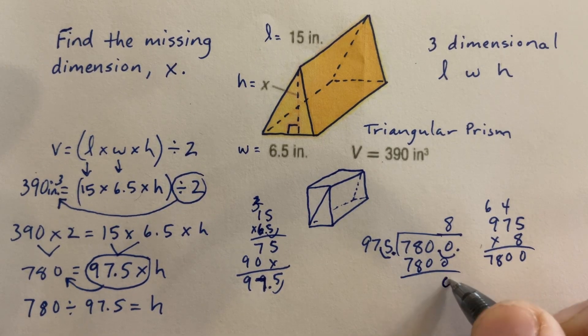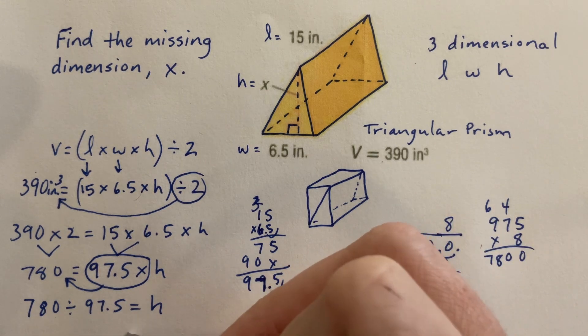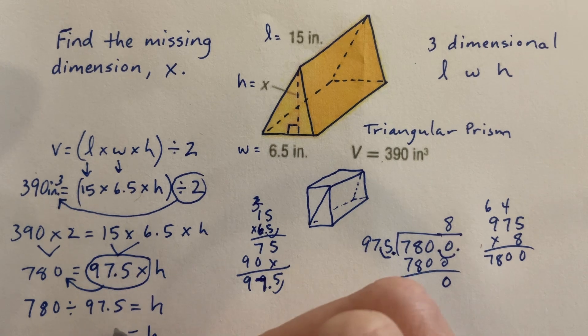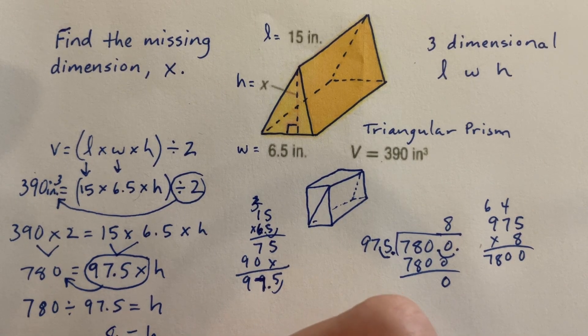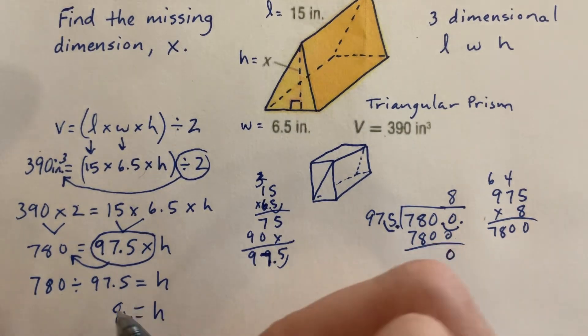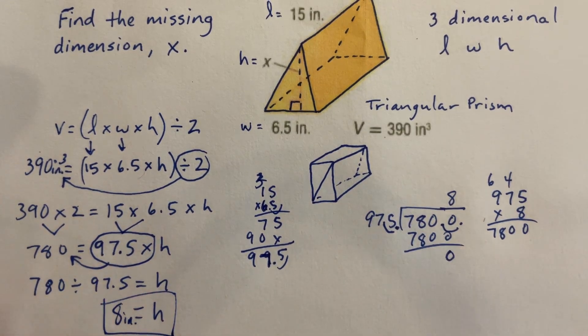So there we have it. We found that our missing dimension, the height, is 8 inches. Hope that helps. Let me know if you have any questions. Thanks. Talk to you later. Bye.